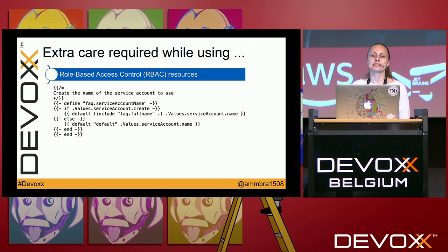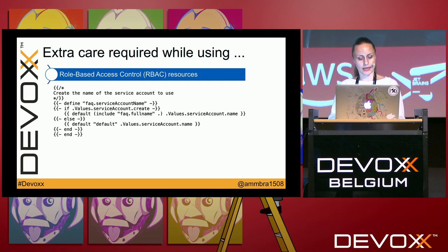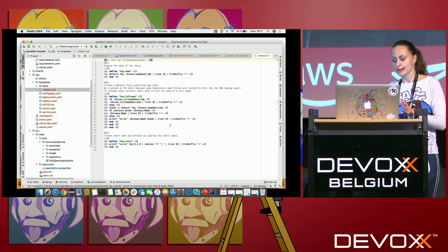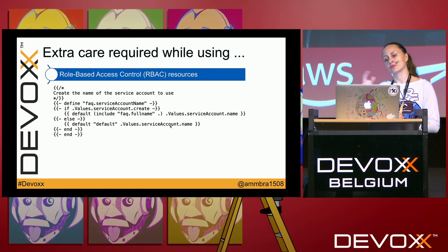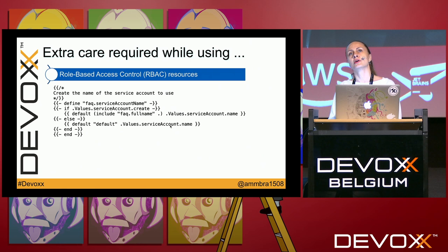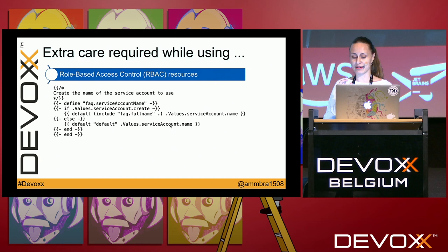Last, for role-based access control resources, you can create templates for service accounts, role bindings, roles, cluster role bindings, and more using the `helpers.tpl` file, which is great for defining and reusing templates across your charts. However, use extra care when automating authorization-related resources, as there can be some pain involved.